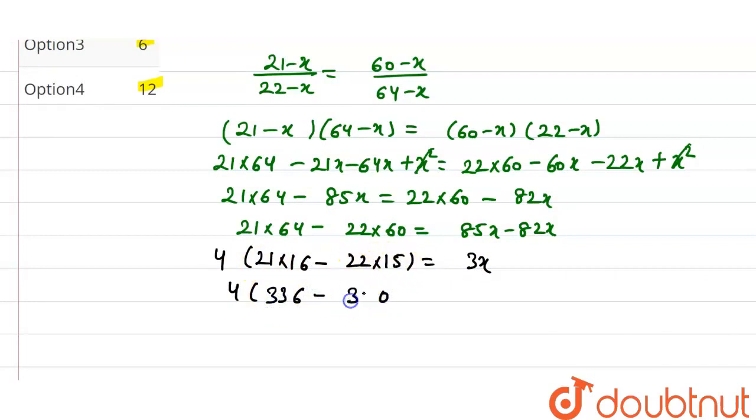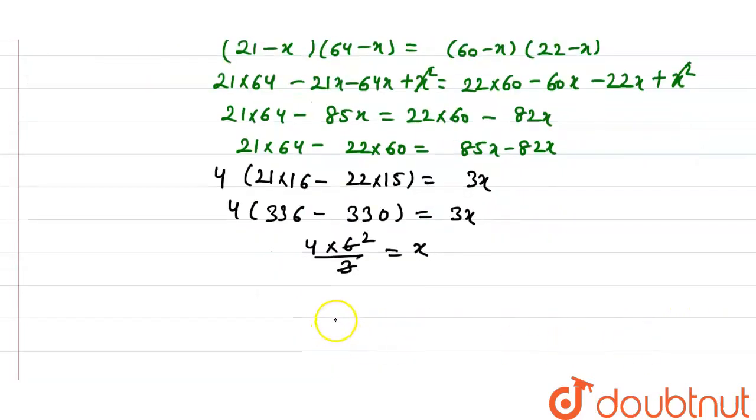This gives 12 divided by 3 equals x. Therefore x equals 4. Now we need the mean proportion.